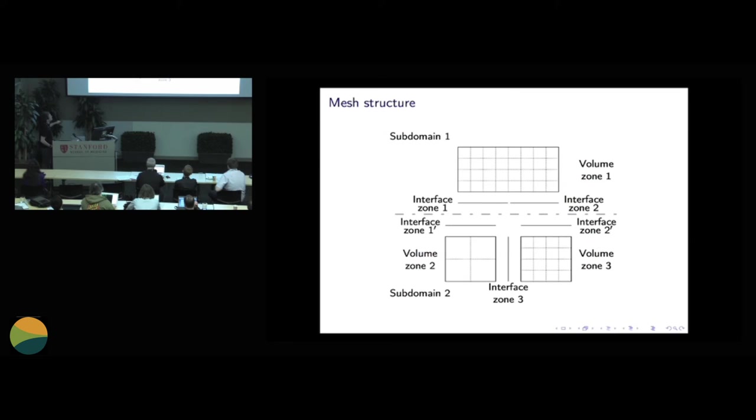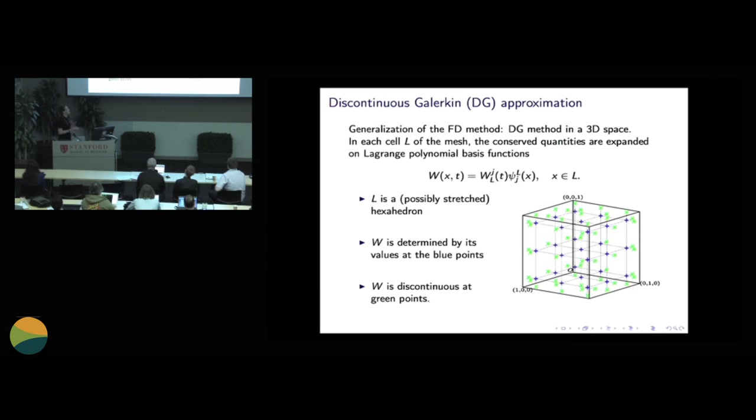So here you have another view of the data structure. So we have a volume zone. You use interface zones. They are used in order to exchange data between two volume zones. And you can also mix a coarse grid to fine grids. In each grid, in each exahedron, we use several interpolation points. So here you see that for one cell, we will sample the solution at the blue point here. And for more flexibility, we allow to have discontinuity at the green points. So that you don't have to match the two zones in order to have more flexibility.